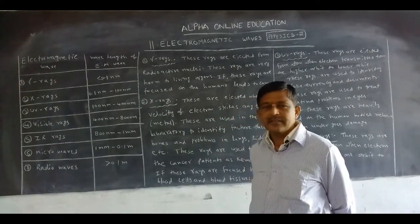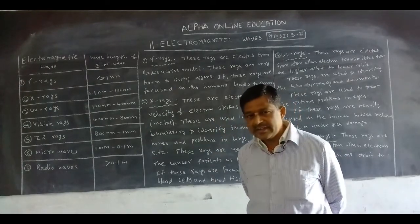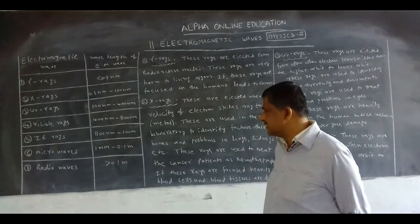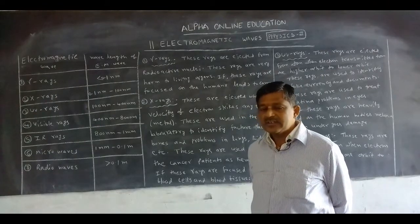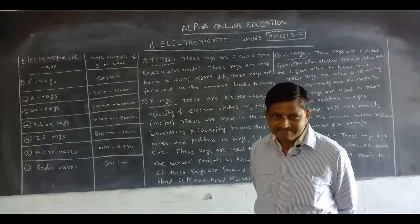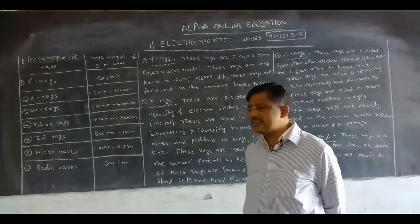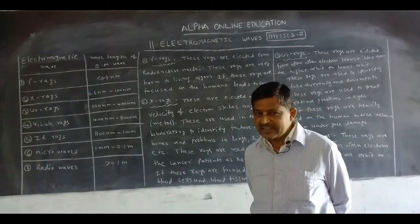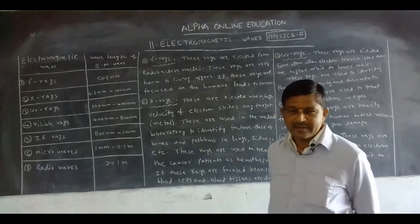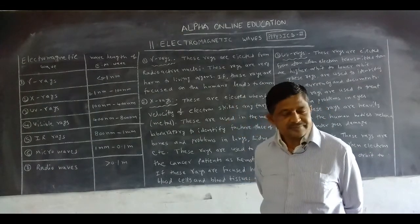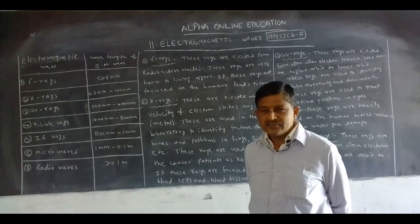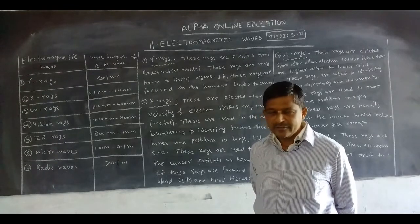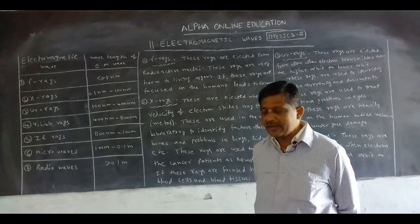X-rays also do not deviate in an electric field or magnetic field; their velocity is 3 × 10⁸ m/s. Ultraviolet rays likewise do not deviate in electric or magnetic fields, and their velocity is 3 × 10⁸ m/s. Visible rays also do not deviate in electric or magnetic fields, with velocity 3 × 10⁸ m/s.